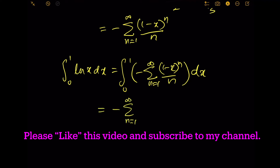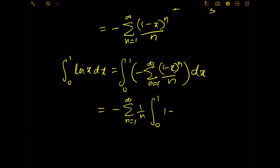We pull the negative sum from n equals 1 to infinity of 1 over n outside, then deal with the integral from 0 to 1 of (1 minus x) to the power n dx.